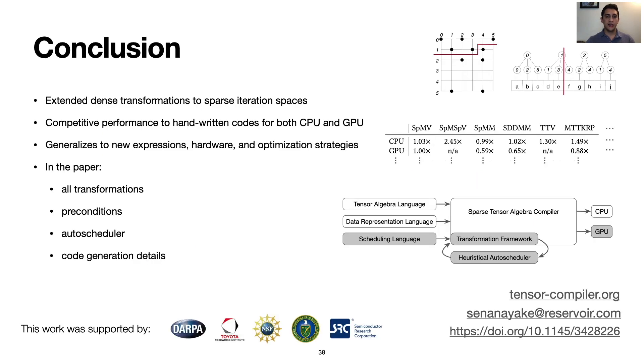In conclusion, this work allows for transforming sparse iteration spaces, which unlocks the ability to automatically generate high-performance CPU and GPU code. We further show that these transformations are general and provide opportunities to optimize for new expressions and hardware in unexplored ways. Please see the paper for more details or the website to try more expressions yourself. Thank you very much for your attention and I look forward to answering your questions during Q&A or by email. Thank you.